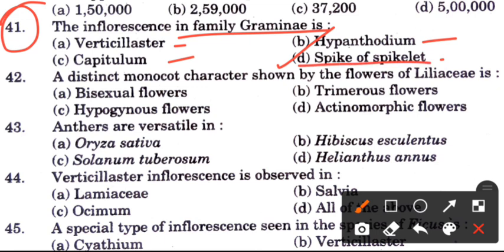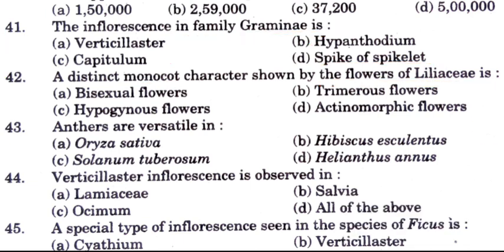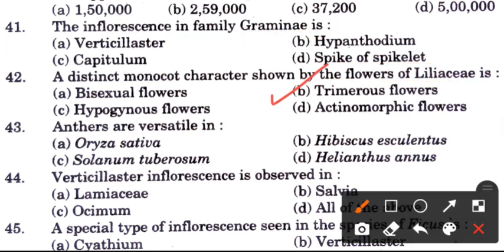Question 42: A distinct monocot character shown by flowers of Liliaceae — options are bisexual flowers, trimerous flowers, hypogynous flowers, and actinomorphic flowers. The answer is B, trimerous flowers, which is the distinguishing character.